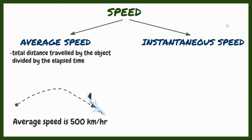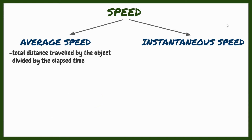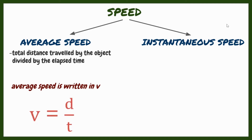Based on what we stated, the average speed can be calculated using this formula: average speed equals the total distance divided by the total time.